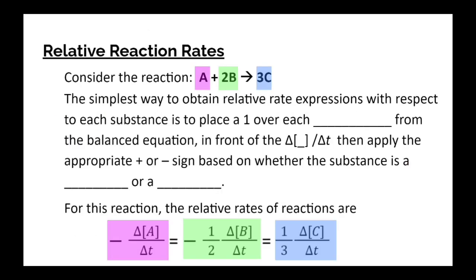Now, if we want to relate these to each other, to make everything equal, the simplest way to obtain these relative rate expressions, to make all of these rates equal to the rate of the reaction, is to put a 1 over the coefficient, basically to do the inverse of the coefficient from the balanced equation, in front of the relative rate change expression, where we have the change in some concentration of A, B, or C over time.